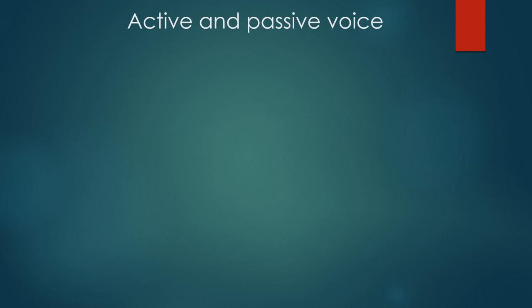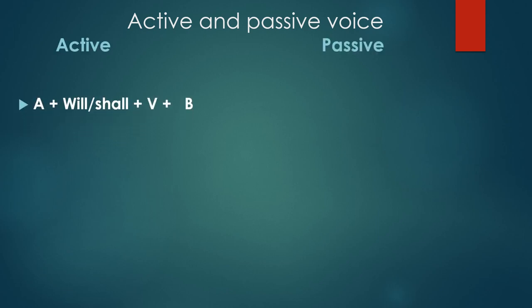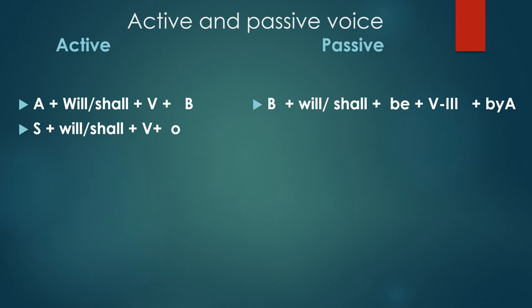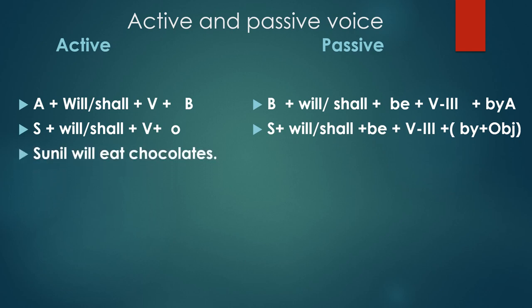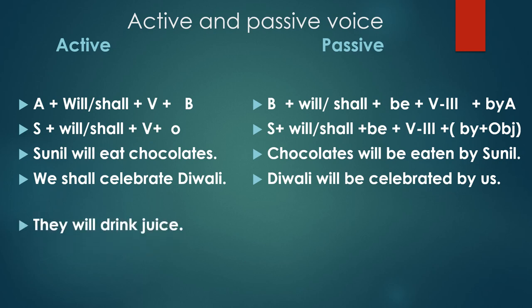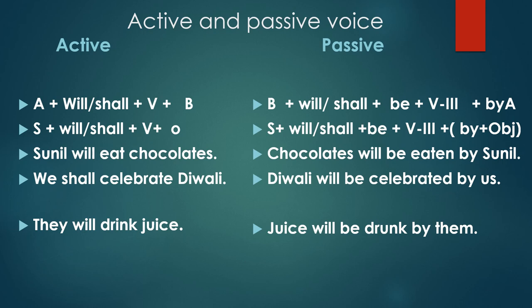Now let us transform the sentence from active to passive voice. A is the subject, B is the object. B will become the subject and A will become the object, using 'by'. 'Sunil will eat chocolates' — Sunil chocolates kaayega. Passive: 'Chocolates will be eaten by Sunil' — Chocolates Sunil ke dwara khaya jayenge. 'We shall celebrate Diwali.' 'They will drink juice' — we juice pihenge. Passive: 'Juice will be drunk by them' — juice unke dwarah pia jayega.